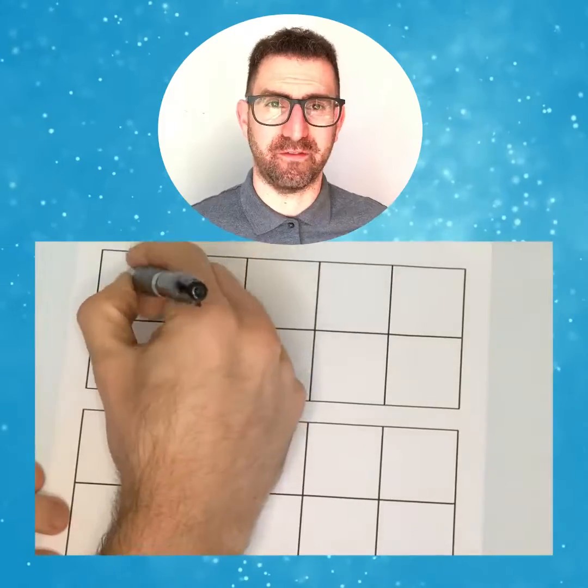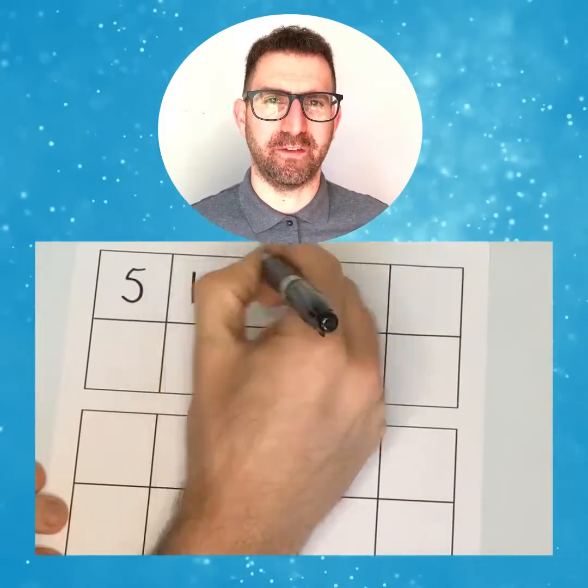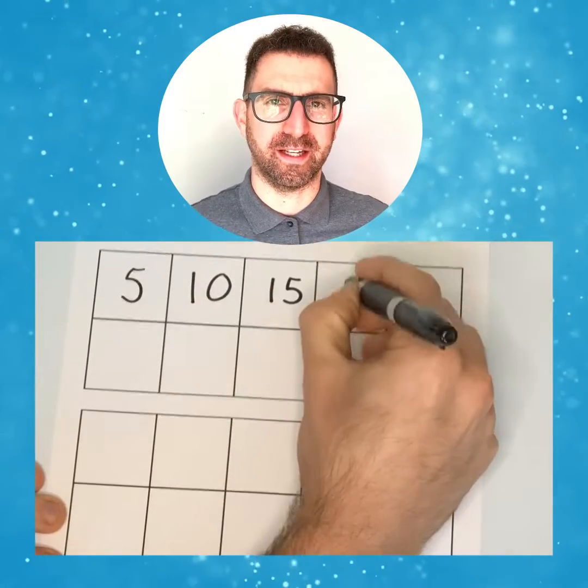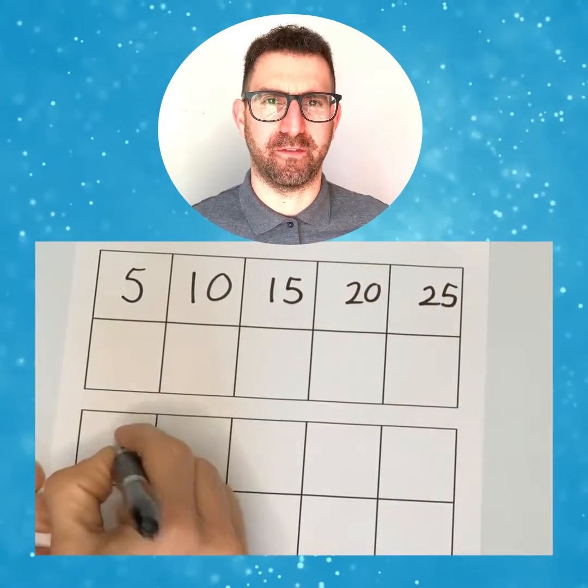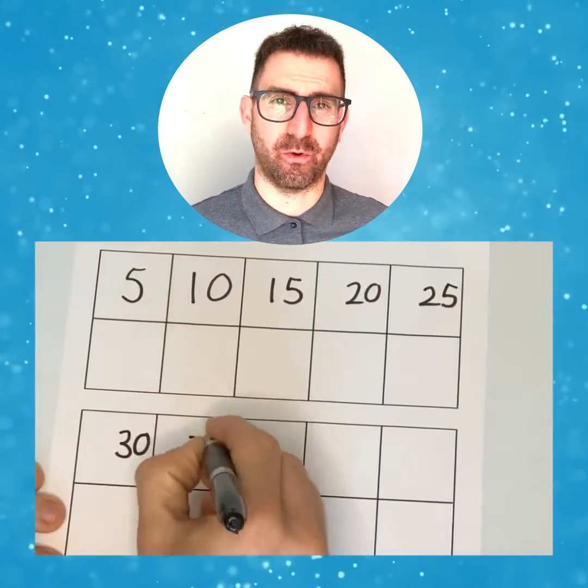So in our five times table it is 5, 10, 15, 20, 25, 30, 35, 40 and so on.